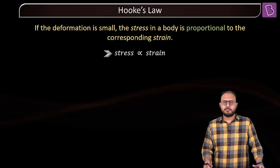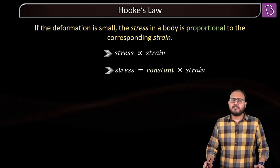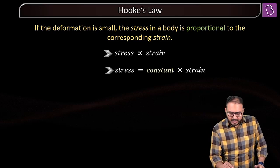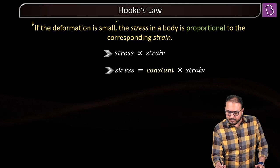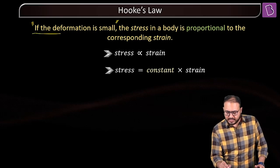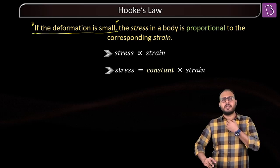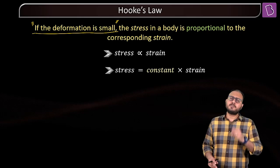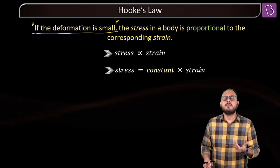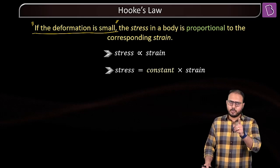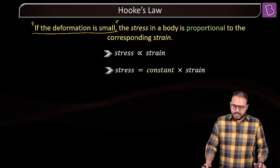Hooke's Law says: if the deformation is small — now that is a fairly conditional term. But this is not exact science; this is very arbitrary. What do you mean by small? What defines small? What is small? Good question.